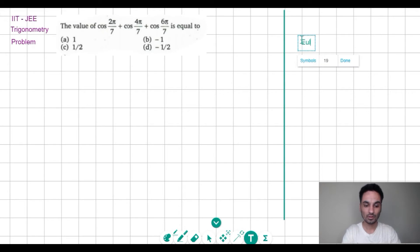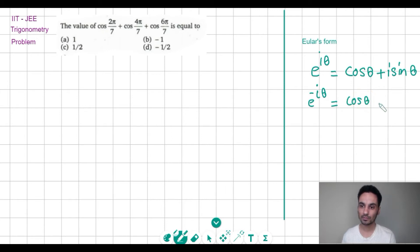Euler's form of a complex number is that a complex number can be written as e^(iθ), which is basically cos θ + i sin θ. In the same manner, I can write e^(-iθ), which becomes cos θ - i sin θ. The reason being cos(-θ) = cos θ and sin(-θ) = -sin θ.